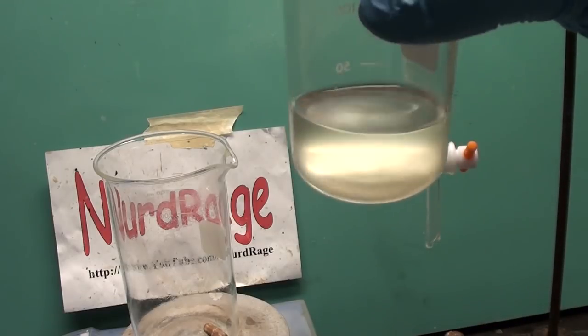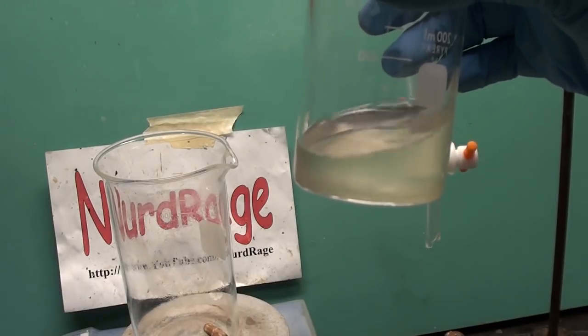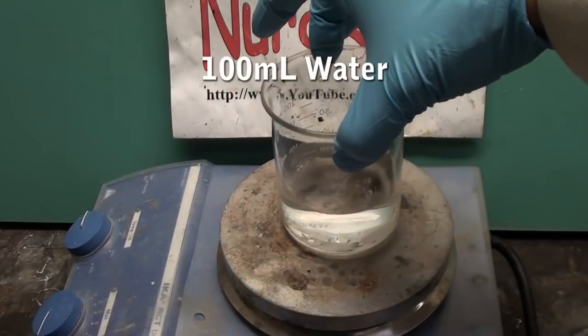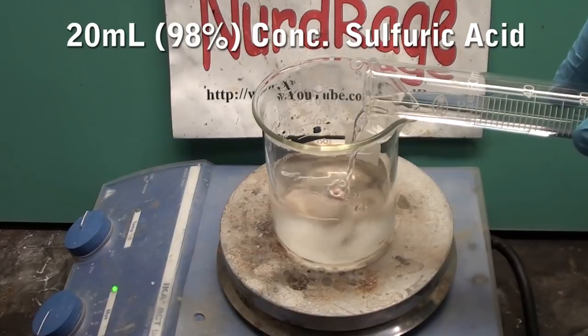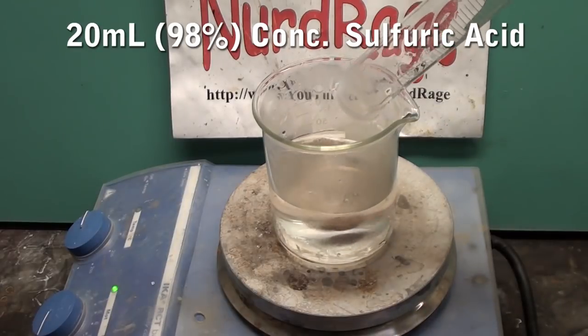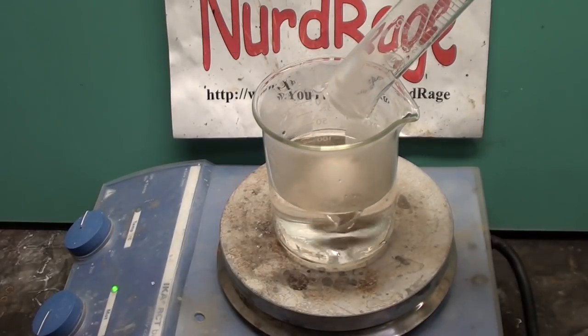Okay here's the ketazine. Now we convert to hydrazine sulfate. First start with 100mL of water and a stir bar. Then with stirring add in 20mL of concentrated 98% sulfuric acid. The solution will heat up a lot.